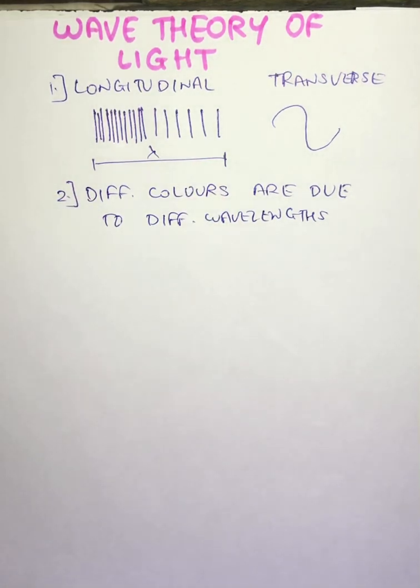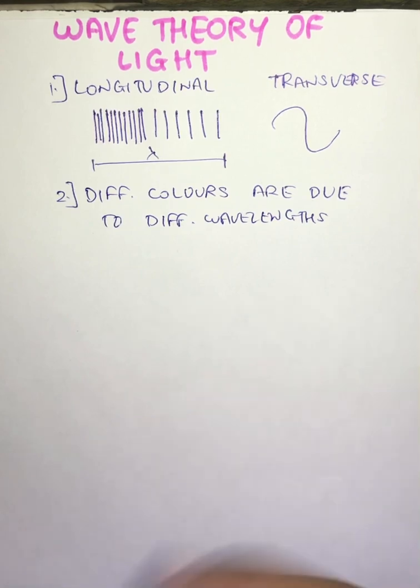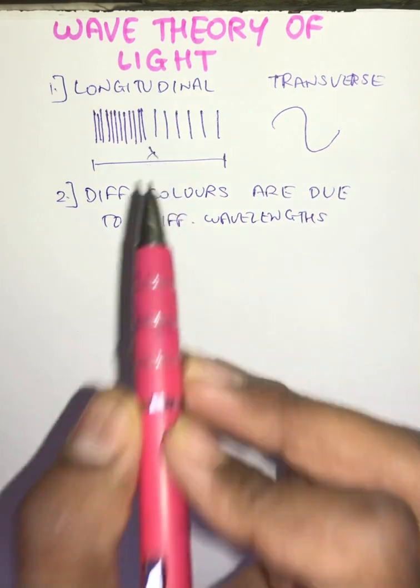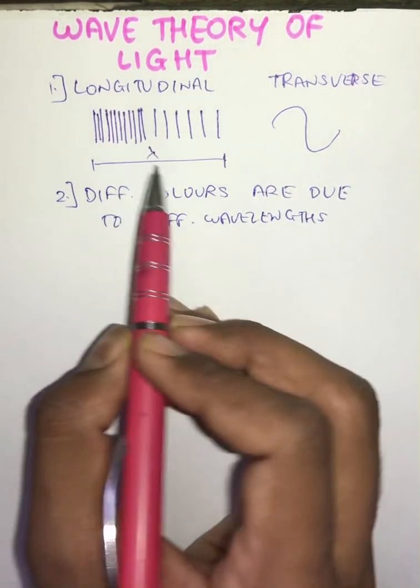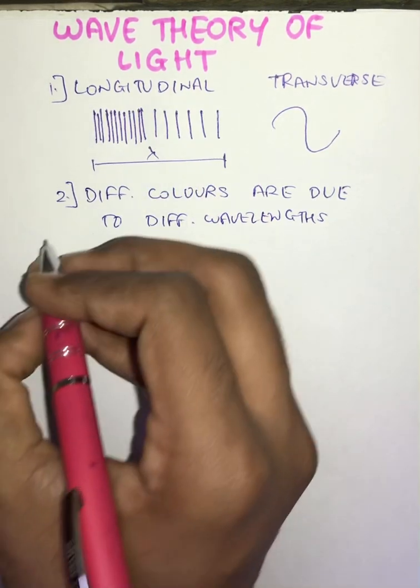According to the second characteristic of wave theory of light, it was said that different values of angstroms will produce different colors. Depending on the value of angstroms, that is the value of wavelength of this wave, it will produce different colors.